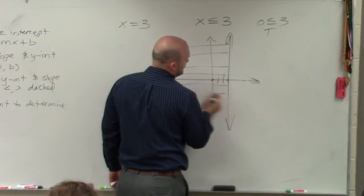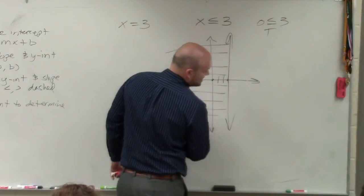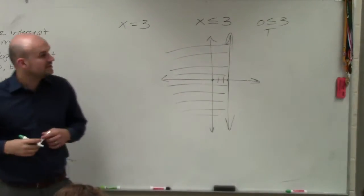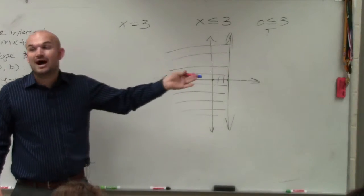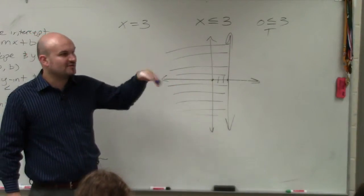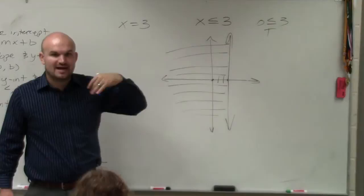So just remember, when you have x is less than, greater than, equal to whatever, that creates a vertical line at the value of x. If you had y less than, greater than, equal to whatever, that creates a horizontal line at the y value.